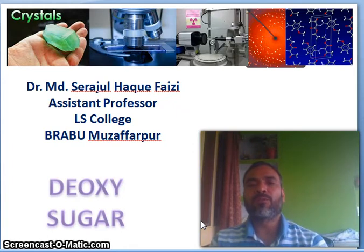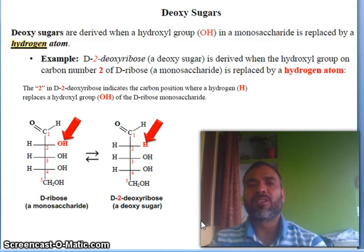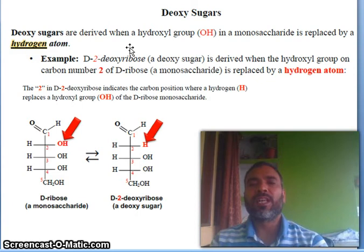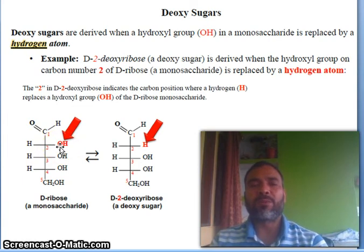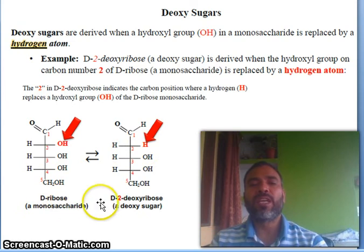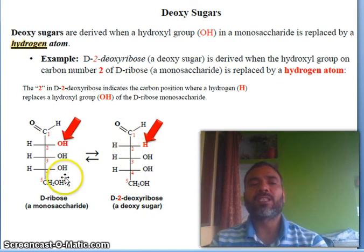Today in this video I am going to explain about Deoxy Sugar. So what is Deoxy? Deoxy sugars are derived when a hydroxyl group OH in a monosaccharide is replaced by hydrogen atom. You see here, this is D-ribose and at the second carbon there is an OH group. If this OH group is replaced by hydrogen, then we are saying this carbon is Deoxy. So this is D-ribose and this is D-2-deoxy-ribose. So this is a deoxy sugar and this is an oxy sugar.